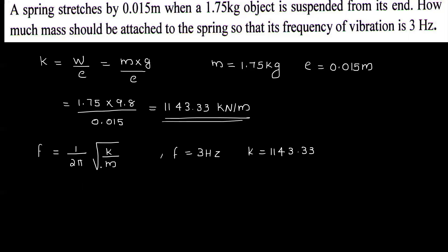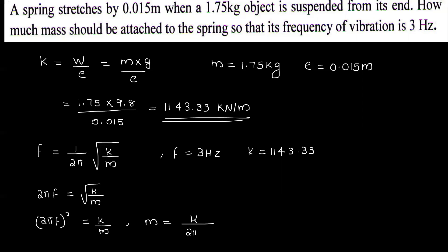Using the relationship ω² equal to K by M, the mass M is equal to K divided by 2 pi f, all squared.